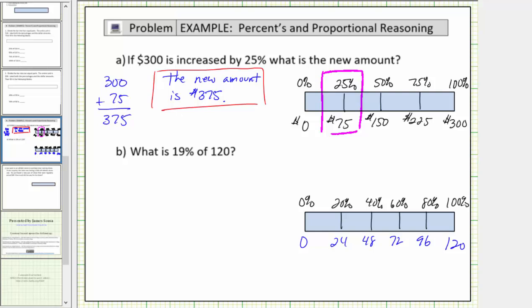So now using the bar, we can see that 20% of 120 is 24. But we want 19%, so if we can find 1% of 120, we would subtract this amount from 24. Well 1% of 120 is 120 divided by 100, which is equal to 1.2.